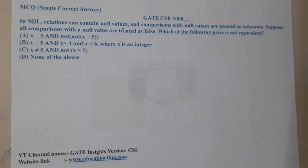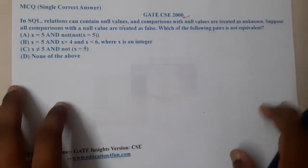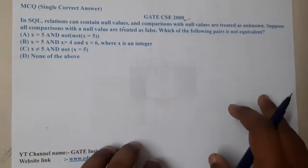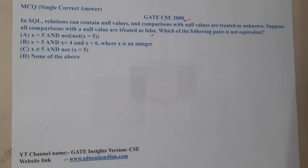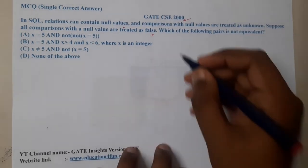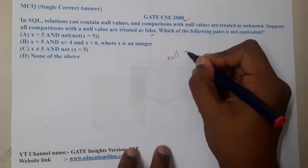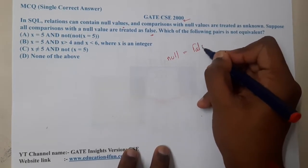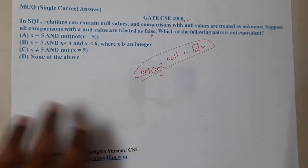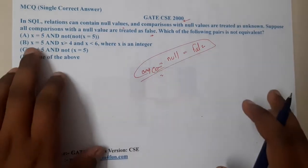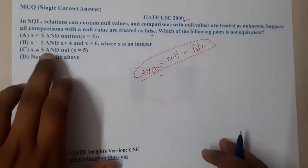That's true, and comparisons with null values are treated as unknown — yes, that's also true. Now suppose all comparisons with null values are treated as false. The question asks: which of the following pairs is NOT equivalent? So any comparison with null is treated as false — that is the key condition given.